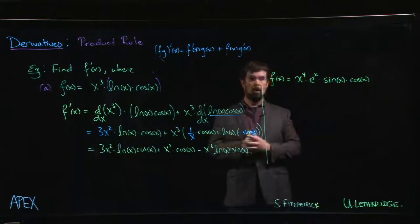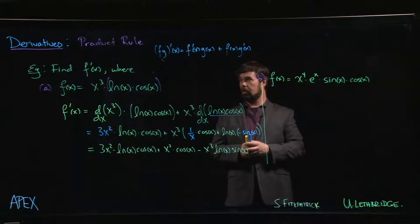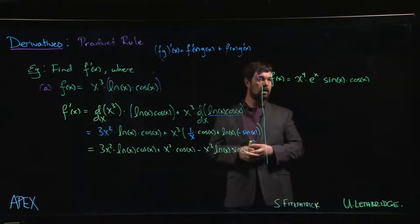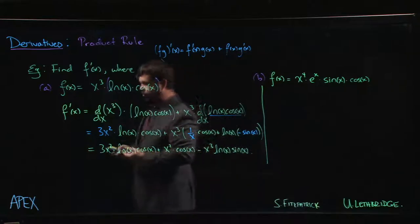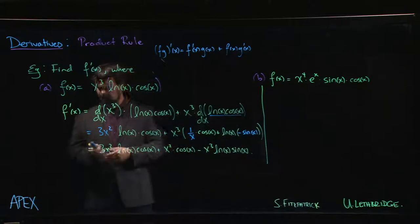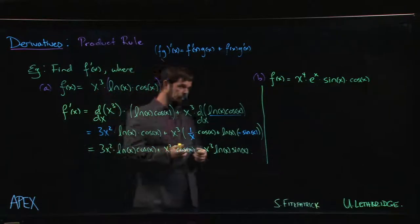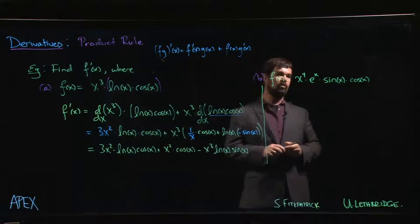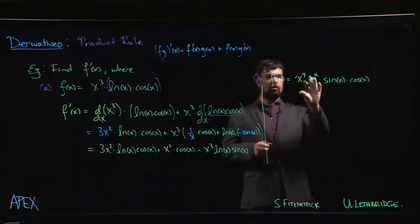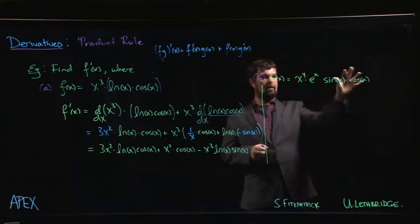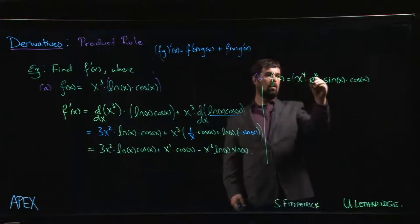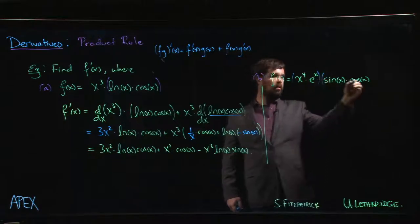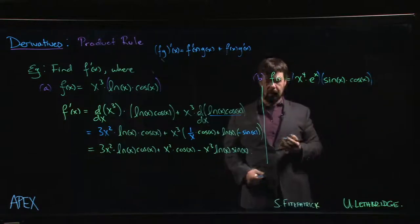Let's look at one more complicated product where we want to apply the product rule — this time it's a product of four things. We can proceed the same way we did before by deciding how we want to group things. We could do one factor times the other three, or we could group them as two pairs: first pair and second pair.